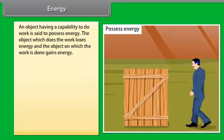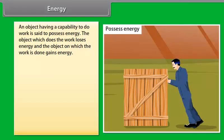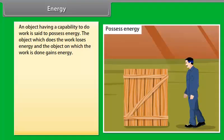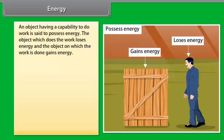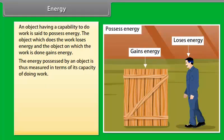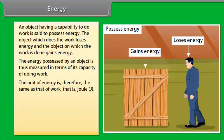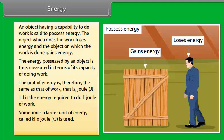An object having a capability to do work is said to possess energy. The object which does the work loses energy, and the object on which the work is done gains energy. The energy possessed by an object is measured in terms of its capacity of doing work. The unit of energy is therefore the same as that of work, that is, joule. Sometimes a larger unit called kilojoule is used; one kilojoule equals one thousand joules.